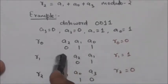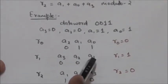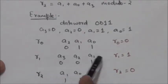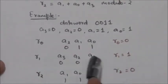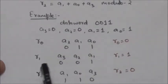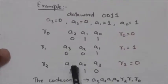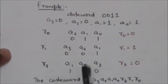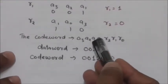Similarly, r1 is the parity bit of a3, a2, and a1, which is 0, 0, 1. This has an odd number of ones, so to make it even, r1 should be equal to 1. Now for r2: r2 is the parity bit of a1, a0, and a3, which is 1, 1, 0. Since 1,1,0 has an even number of ones, r2 will be equal to 0.